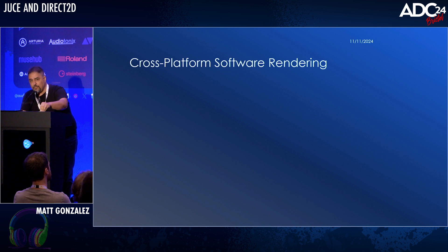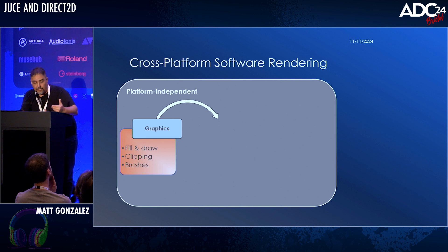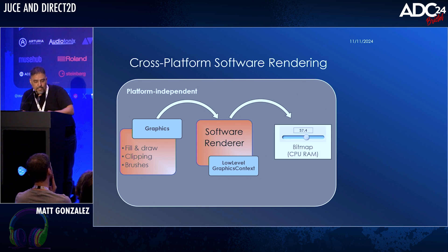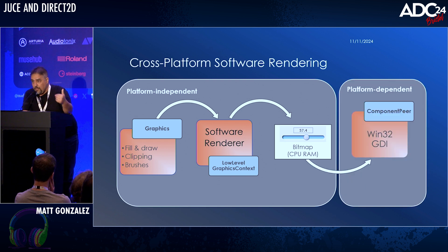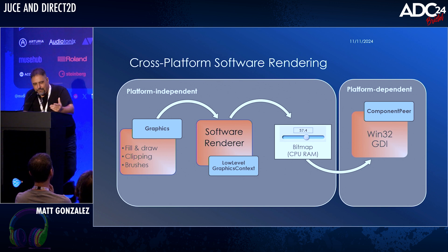I think it's largely because most people even now are still using the software renderer. JUCE has a built-in cross-platform software renderer — it's part of the JUCE graphics stack. The top layer is the graphics class that handles typical procedural rendering calls like drawing rectangles, setting the fill, clipping. Those calls are passed down into a low-level graphics context implementing the software renderer. The software renderer rasterizes a bitmap in CPU memory, which is then passed to a platform-specific layer — in this case the Graphics Device Interface API on Windows. GDI dates back to Windows 1.0, so it's not the most contemporary way of getting images on the screen.